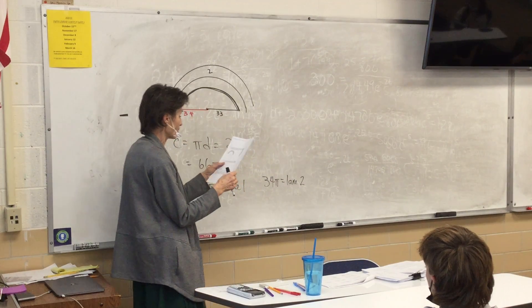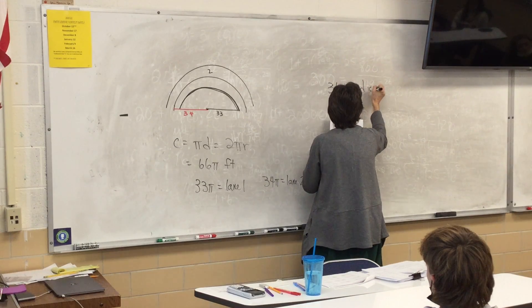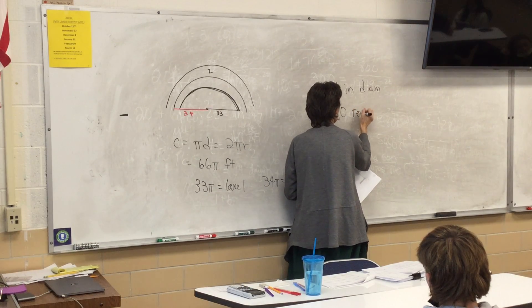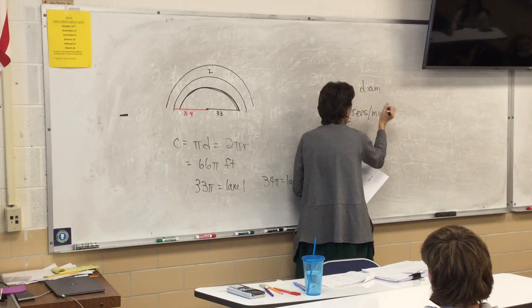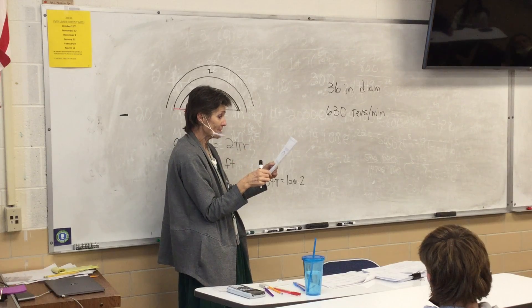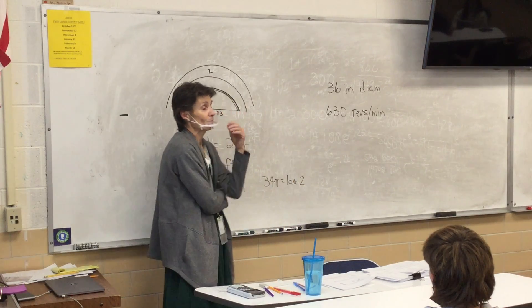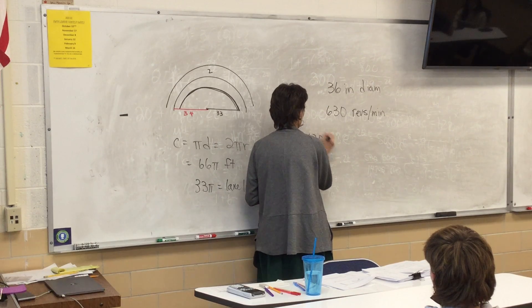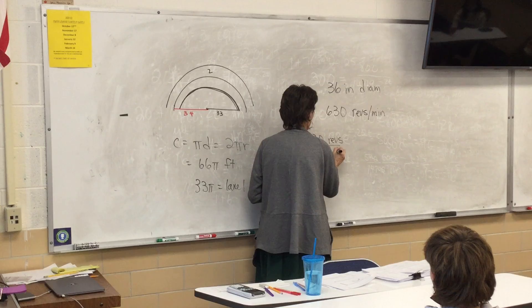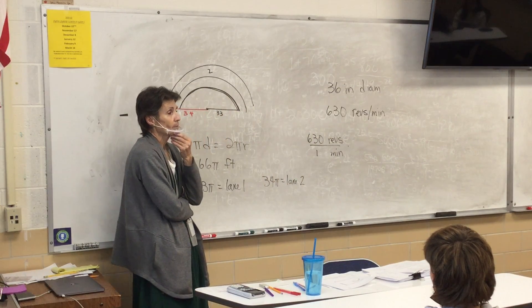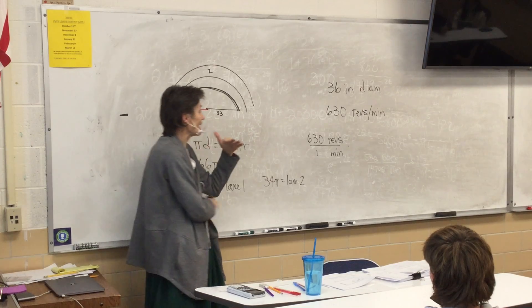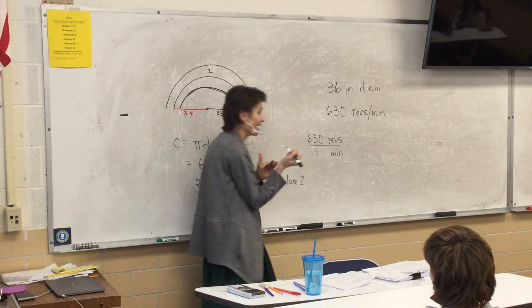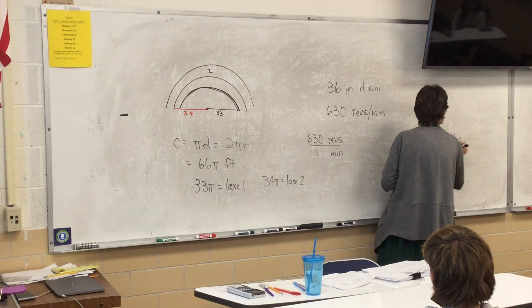All right, Albert's truck has wheels that are 36 inches in diameter. If the wheels are rotating at 630, remember, revolutions per minute, that's what RPM stands for, revolutions per minute. Oh, it says that right there. Find the truck's speed in miles per hour. We did some of these before. Let's start with what we know. We have 630 revolutions in one minute. What do I want to end up with? I'm going to do a bunch of stuff, but what do I ultimately want to end up with? Miles per hour. So I'm going to end up with miles per hour.